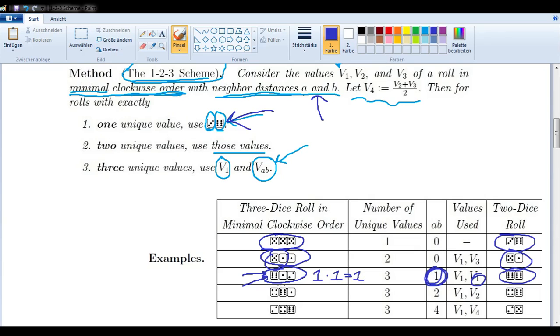If we have 4,6,1, and these are already in minimal clockwise order, so we don't need to order them. The neighbor distances would be two and one. So we multiply those and get two, so our index must be two. We use, in other words, value one and value two. So the four and the six.